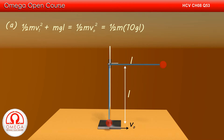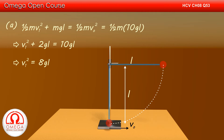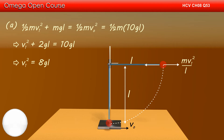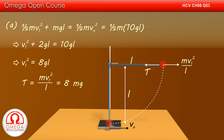The value of V0 is √(10gL). Dividing both sides by ½m gives V1² + 2gL = 10gL, so V1² = 8gL. In the free body diagram, since the bob moves in a circular path of radius L, the centripetal force mV1²/L acts horizontally toward the center, balanced by tension T. Balancing forces horizontally: T = mV1²/L = 8mg. This is the answer to Part A.